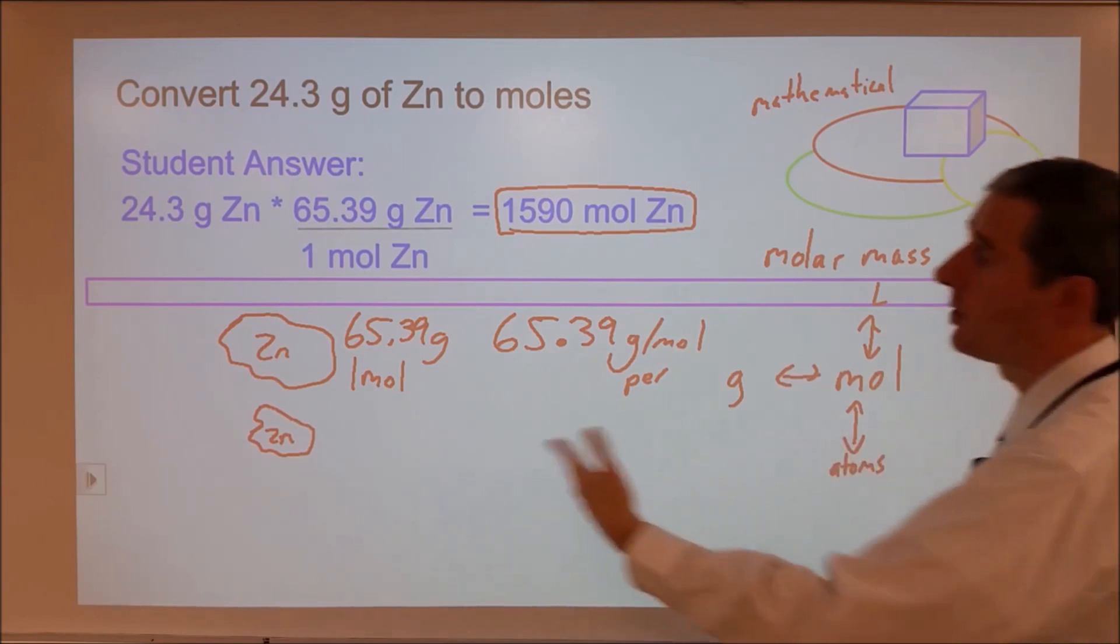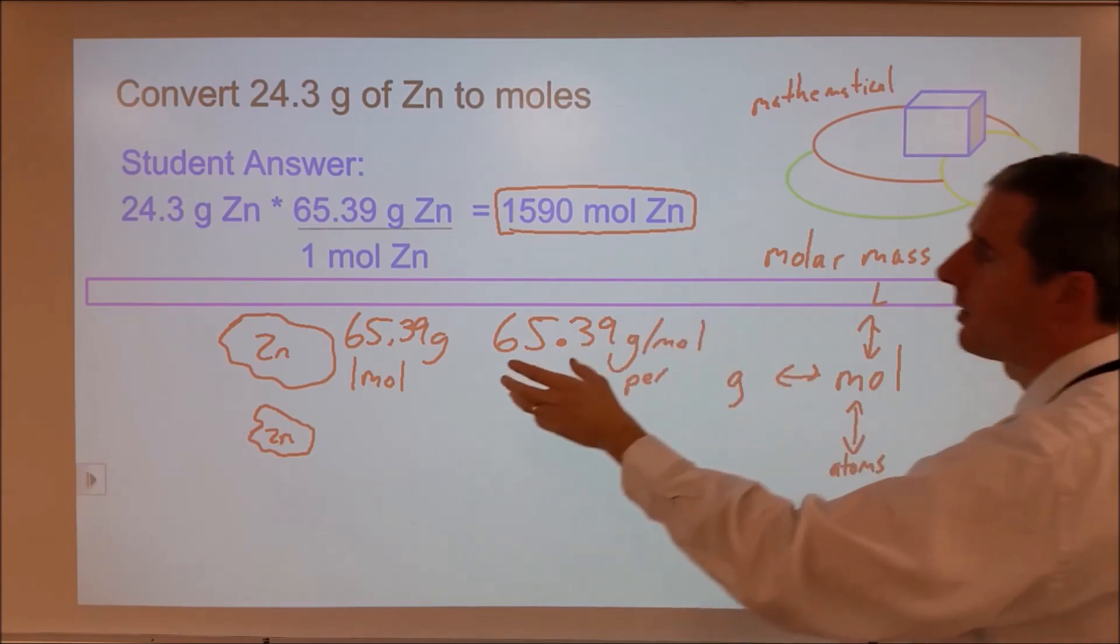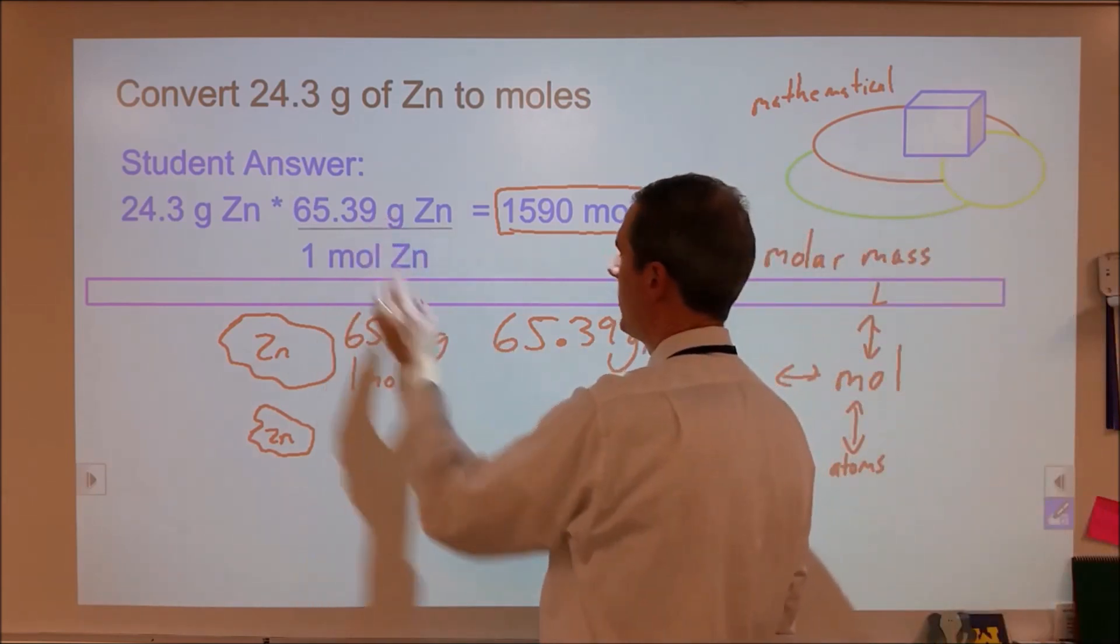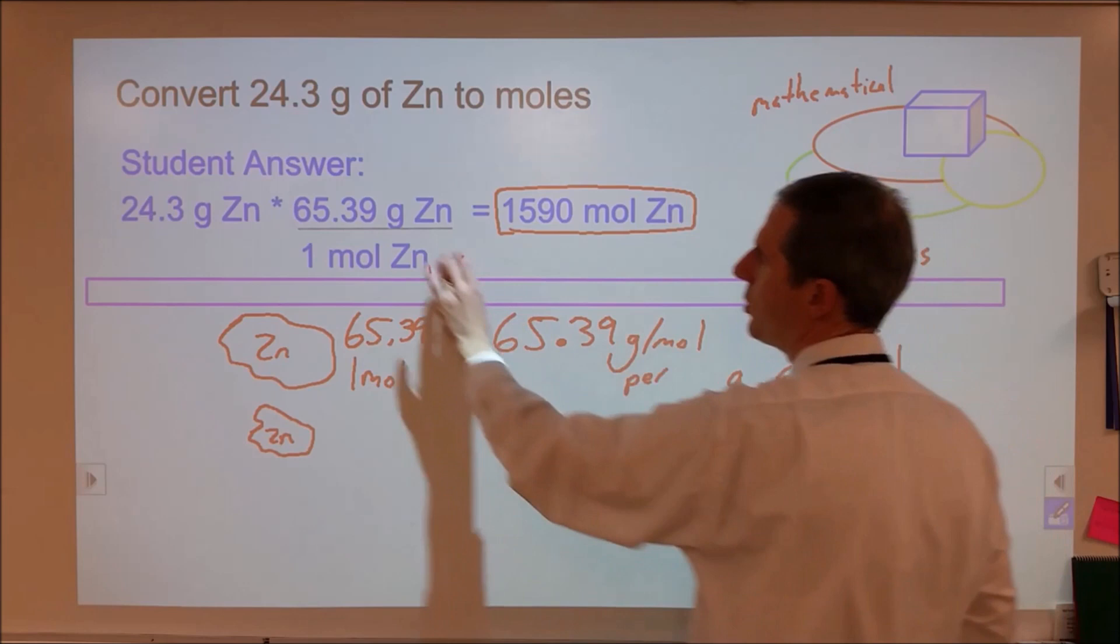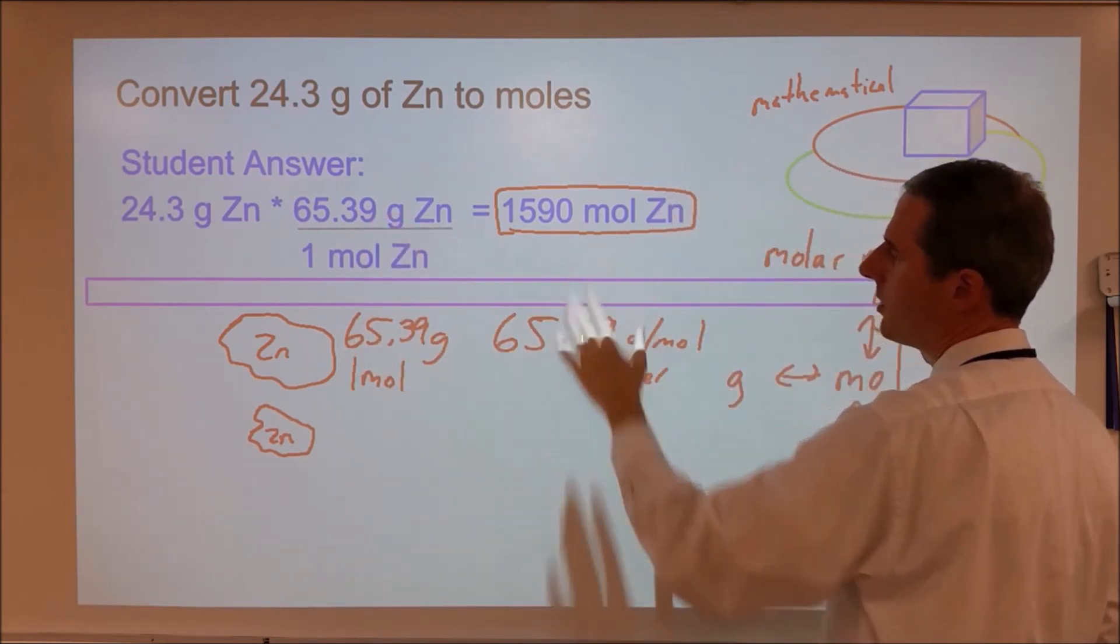And they followed through most of the mathematics of it, but they didn't have a good sense of what this was and how to translate that into this. And it was this misunderstanding that's causing this to go wrong.